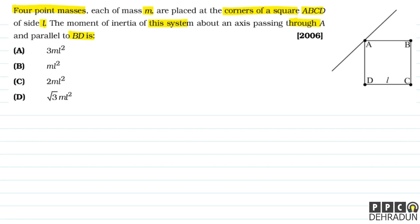...parallel to BD is dash. तो देखिए बच्चों, हमारे को कहा गया है कि यहाँ पर 4 point masses हैं और सबका mass m है और वो a, b, c और d पर हैं। अब हमारे को बताना है moment of inertia of this system about an axis जो कि point A से pass कर रही है और diagonal BD के parallel हो।